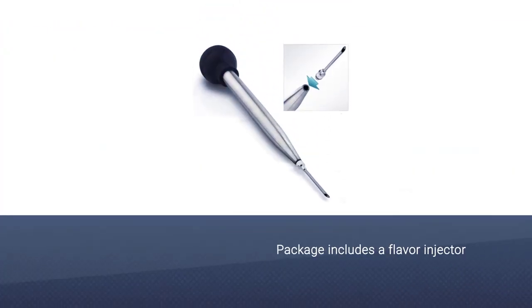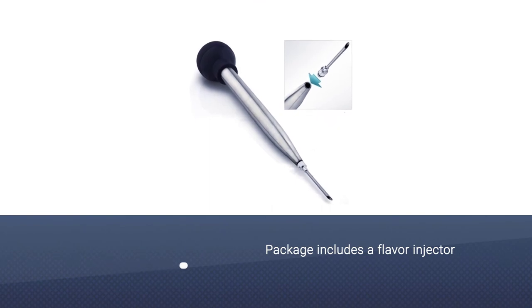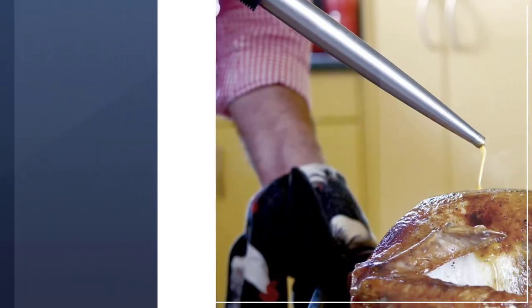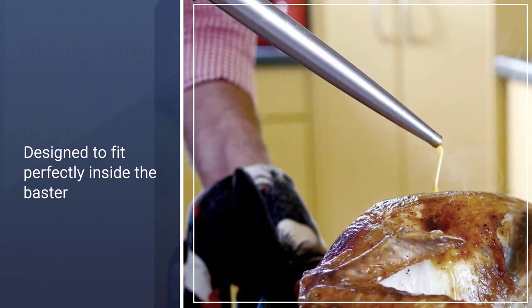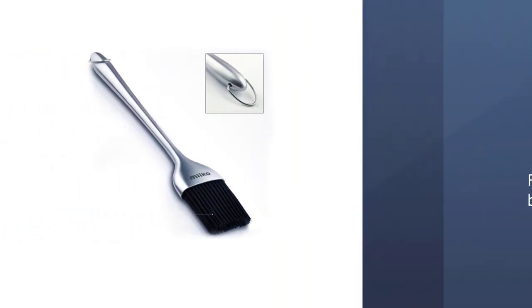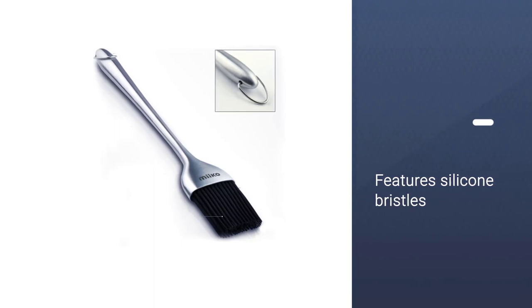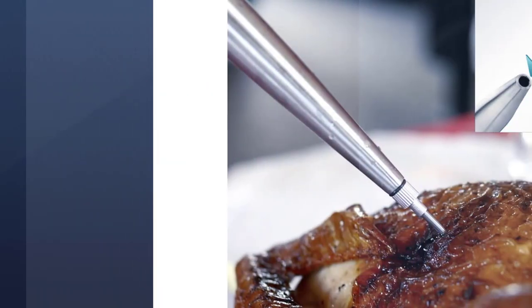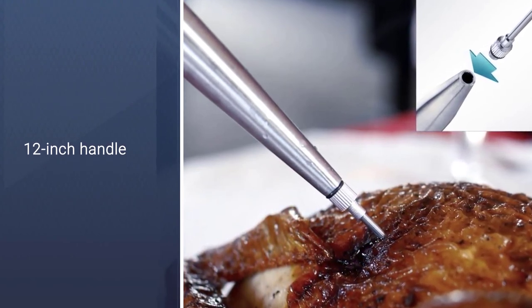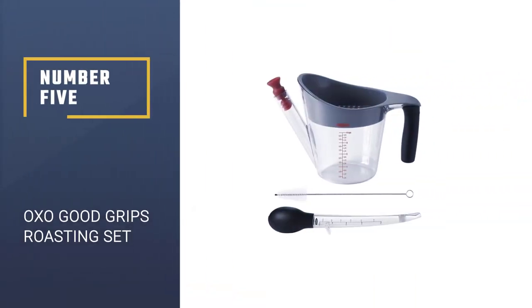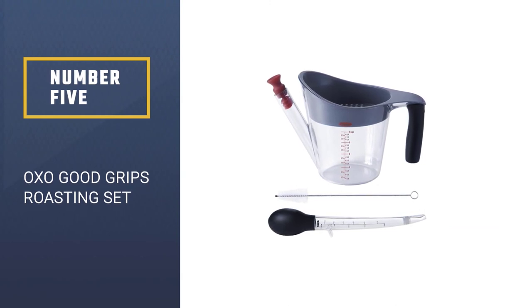The package includes a flavor injector. All you have to do is screw it onto the end of the baster and a cleaning brush designed to fit perfectly inside the baster. Meanwhile, the basting brush features silicone bristles and a long 12-inch handle to keep you away from the heat, making it perfect for basting your turkey or using it to barbecue all summer long. Number five, OXO Good Grips Roasting Set.